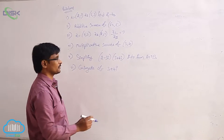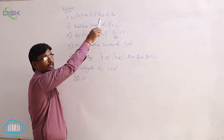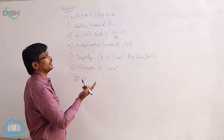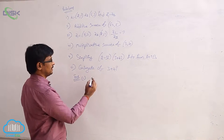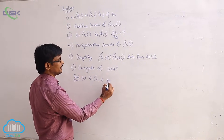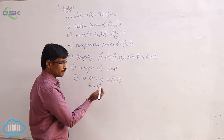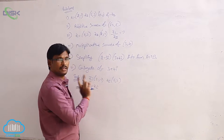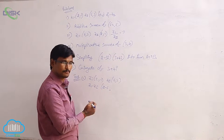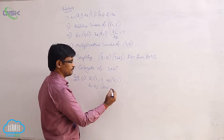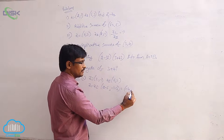We will see some problems in this chapter on complex numbers. The first one: we have z1 and z2, and we need to find z1 minus z2. For subtraction, we subtract corresponding elements. Here z1 is (2, -1) and z2 is (6, 3). So we separate corresponding elements: 2 minus 6, and minus 1 minus 3. The answer is minus 4, minus 4.